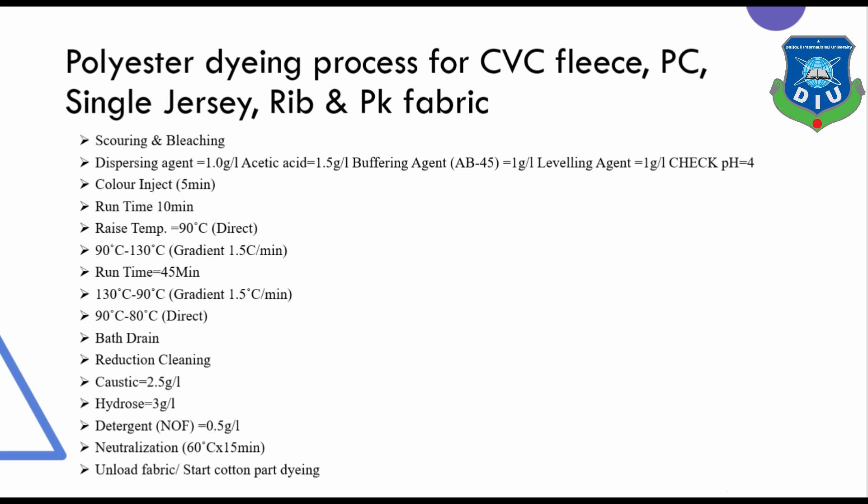Now we will talk about the polyester dyeing process for CBC fleece, PC single rib, and pique fabric. Before dyeing, we need to do scouring and bleaching of the fabric. Add the color for 5 minutes and run time for 10 minutes. Then raise temperature directly to 90 degrees centigrade. Add caustic at 2.5 g/L and Hydros at 3 g/L. Then add detergent NF at 0.5 g/L for 15 minutes at 60 degrees centigrade. Then unload the fabric and start the cotton part dyeing process.